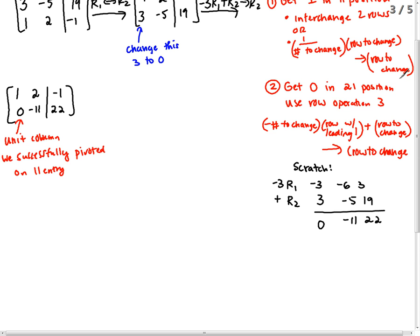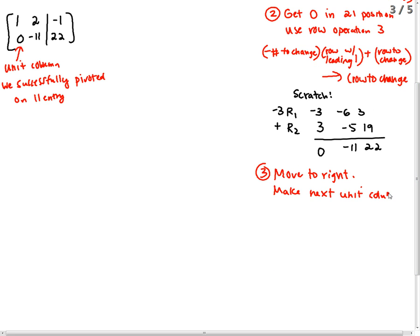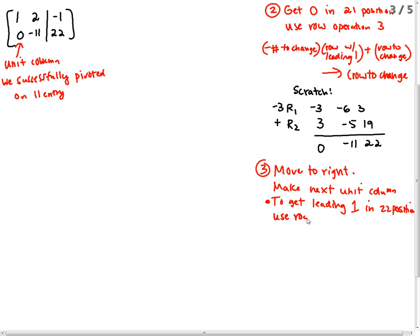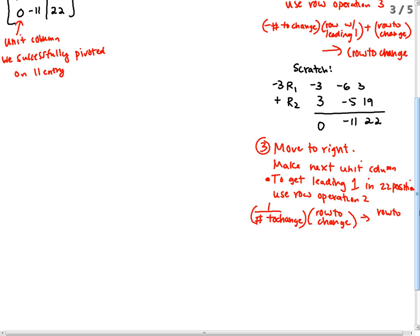Move to the right. Make the next unit column. To get the leading 1, this time it's in the 2,2 position. We are going to use row operation 2, which is 1 over the number of the entry that we're trying to change times the row we're changing, and we're going to stick that back in the row we're changing.